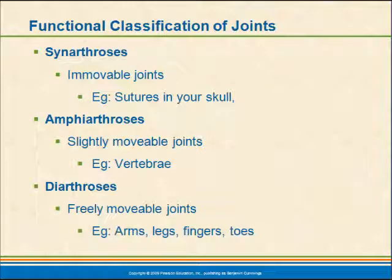We have immovable joints called synarthroses — examples are the sutures in the skull. We have amphiarthroses, which are slightly movable joints, such as those in the vertebrae. And then we have diarthroses, which are freely movable joints. Freely movable doesn't mean they can go in any direction, but within a range of movement they have a free range — arms, legs, fingers, toes.